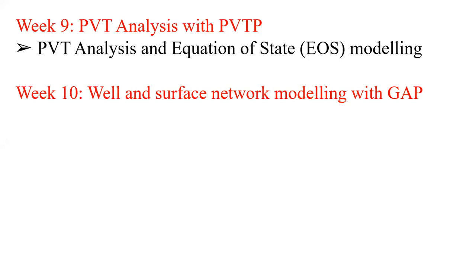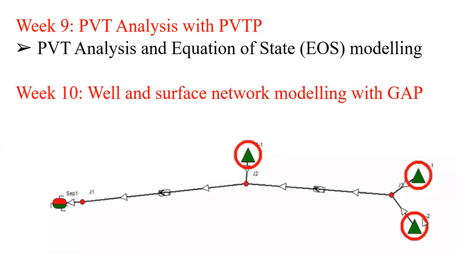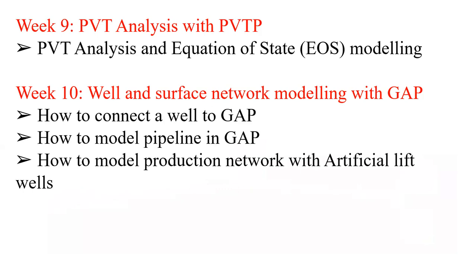For week ten, we do well and surface modeling using GAP. We may have a field with multiple producing wells, and the company wants to minimize costs by connecting all these wells to a single flow line going to a separator. We must model how this entire interconnected system functions, because a parameter change in one well affects pressure and properties throughout the flow line. GAP models this situation to see exactly what happens in the flow line and the various changes that may take place.